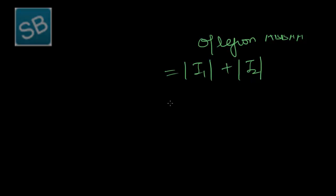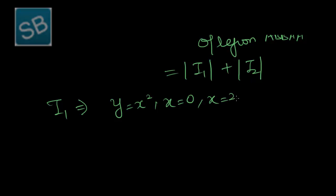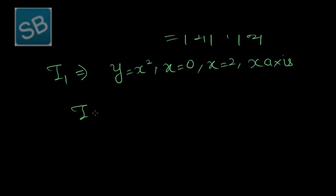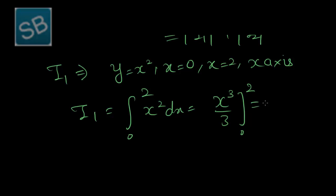I1 is equal to the integral from 0 to 2 of x squared dx, which equals x cubed over 3 evaluated from 0 to 2, giving one-third times 8 minus 0, that is 8 over 3.